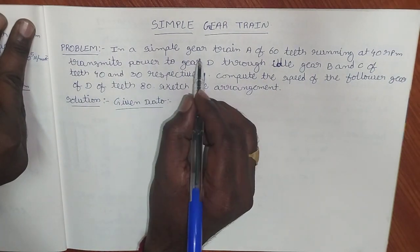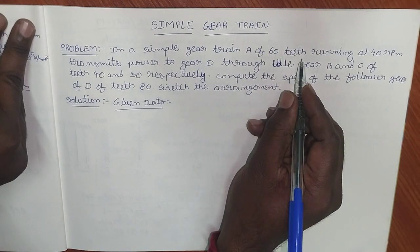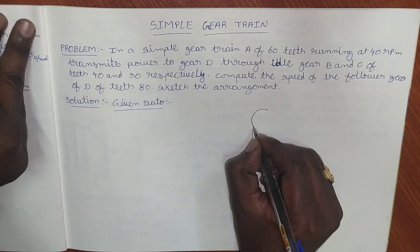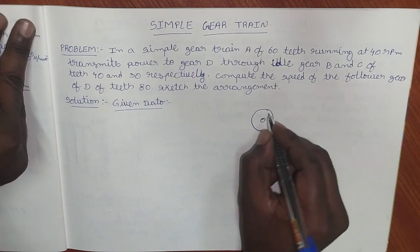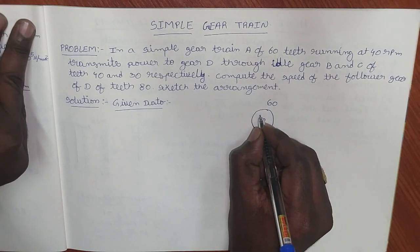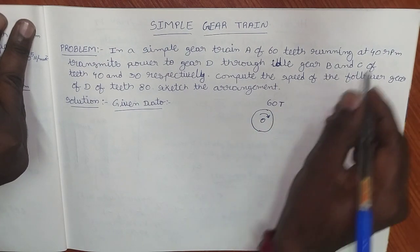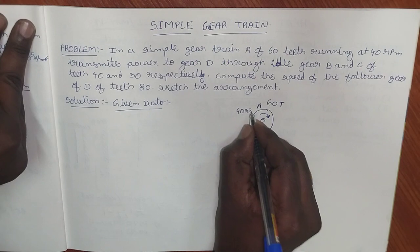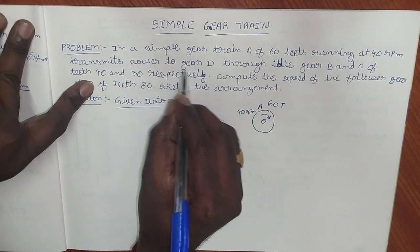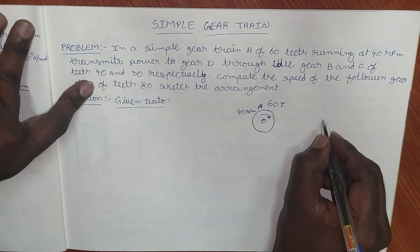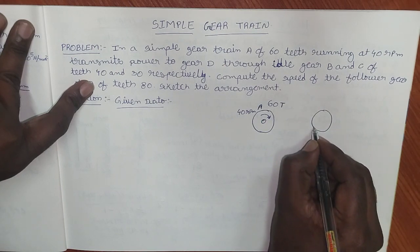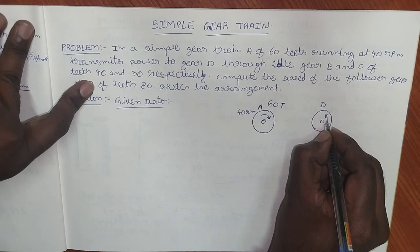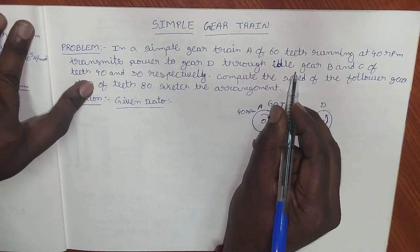This is a simple gear train. Gear A has 60 teeth running at 40 rpm. This is the driver gear. Power is transmitted to gear D through idle gears B and C.